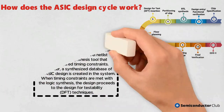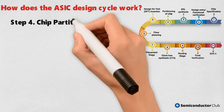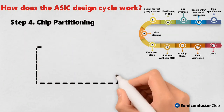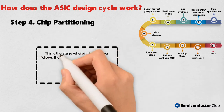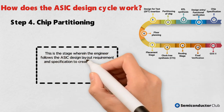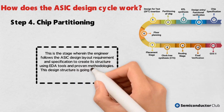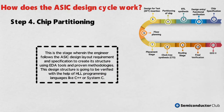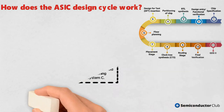Step 4: Chip Partitioning. This is the stage wherein the engineer follows the ASIC design layout requirement and specification to create its structure using EDA tools and proven methodologies. This design structure is going to be verified with the help of HLL programming languages like C++ or SystemC.